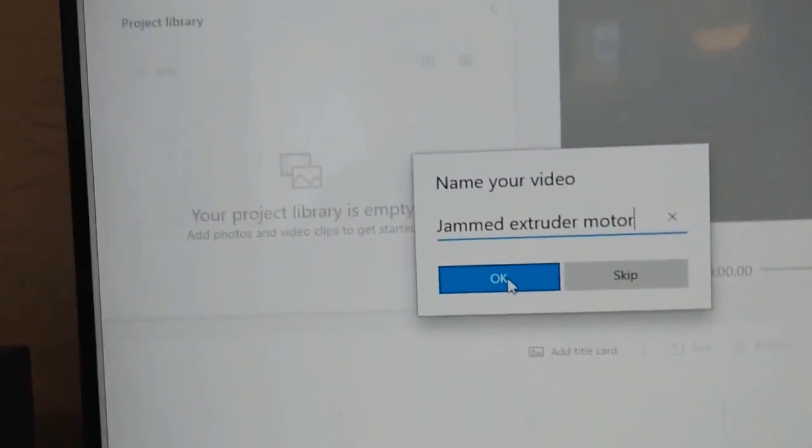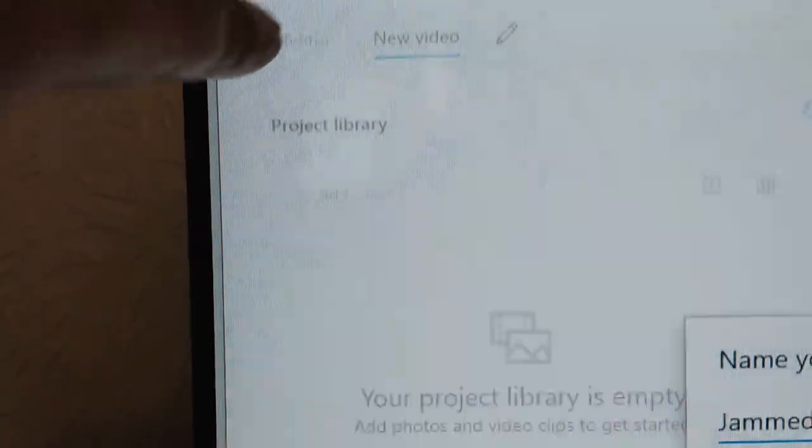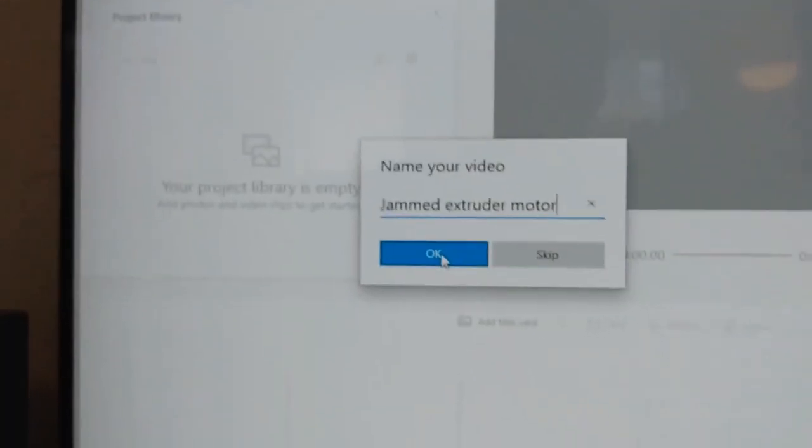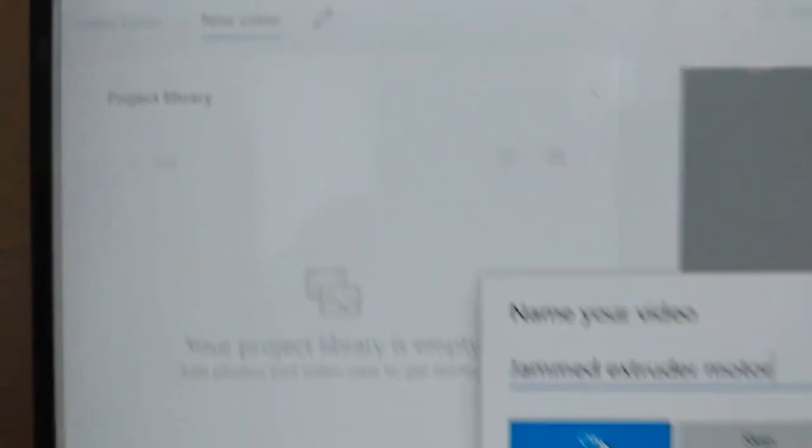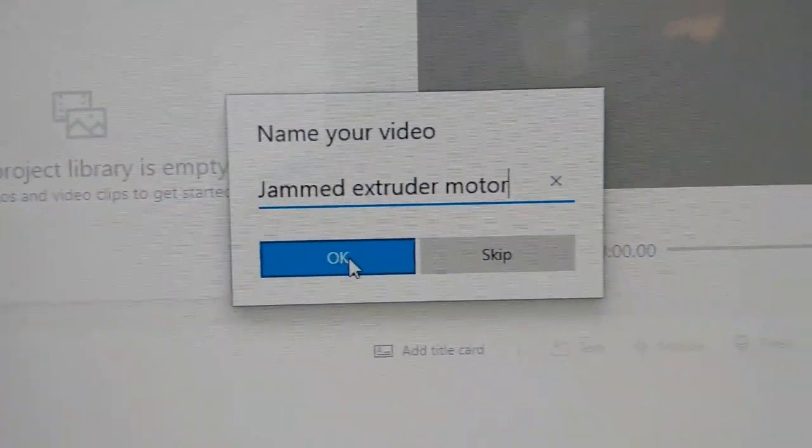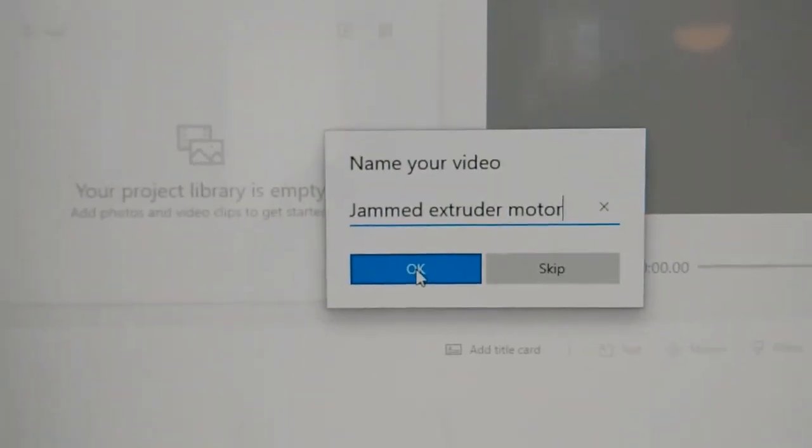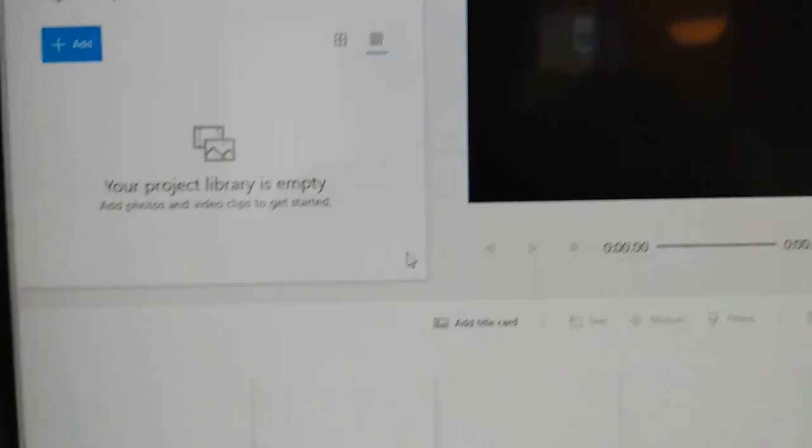Now, the other thing is that I am using a new to me piece of software to edit this video once I get it uploaded from my phone, which is video editor. Which is part of photos and is found if you scroll down the programs under V for video editor. So this is my first project using video editor, the new Windows 10 replacement for Windows Movie Maker. There we go.